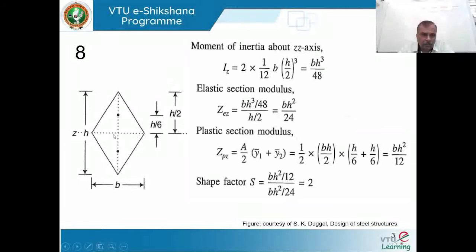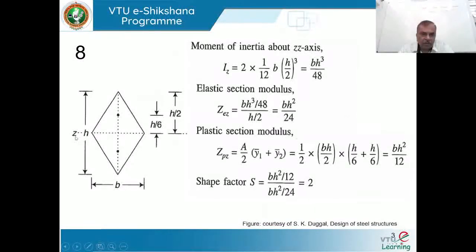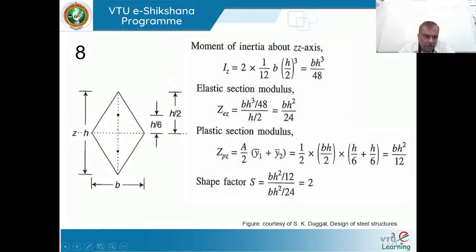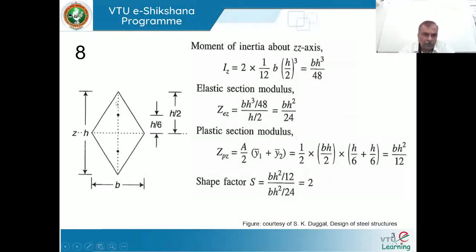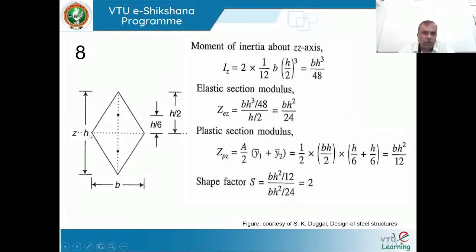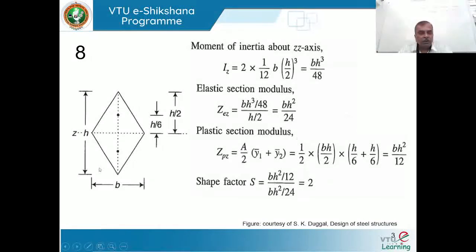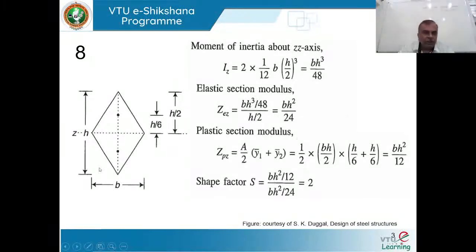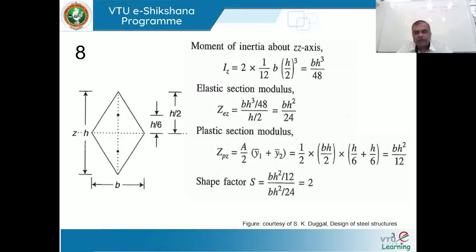The section is placed on its edge such that the smaller diagonal is horizontal with width B, and the vertical diagonal is longer with depth H. The horizontal dimension is taken as width B and the vertical diagonal has depth equal to H. B is horizontal and H is vertical. You can also try keeping H horizontal and B vertical — either way, we get more or less the same answer.